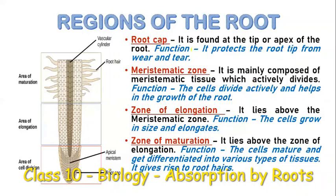Now let us see the different regions of the root. There are four regions: root cap, meristematic zone, zone of elongation, and zone of maturation. The zone of maturation is the topmost part, below it is the zone of elongation, below that is the meristematic zone, and the tip of the root is covered by the root cap.